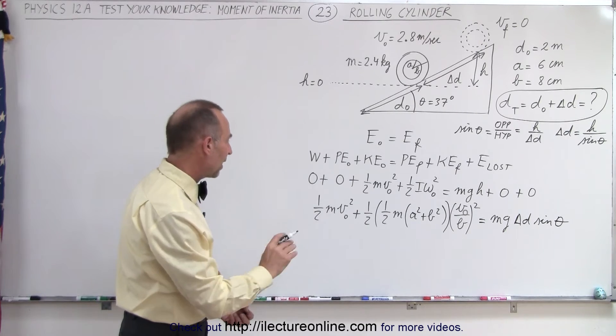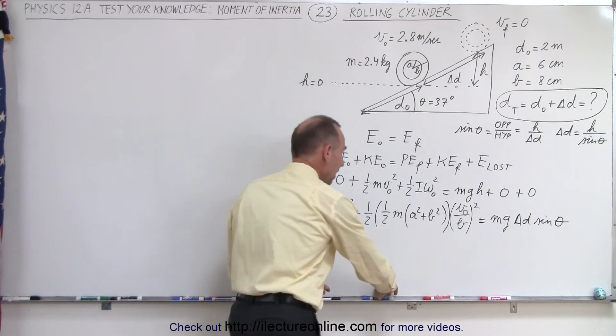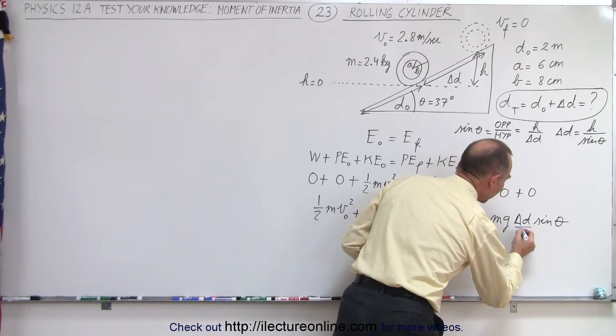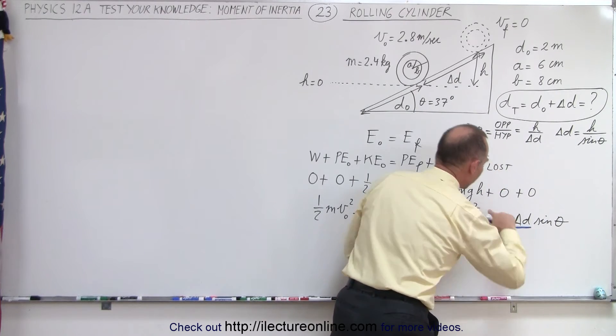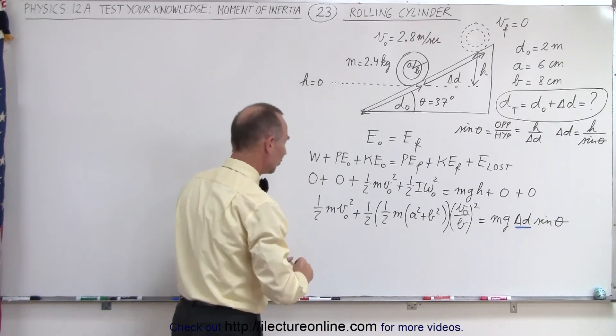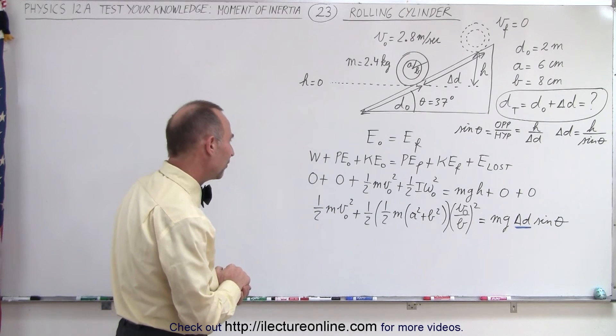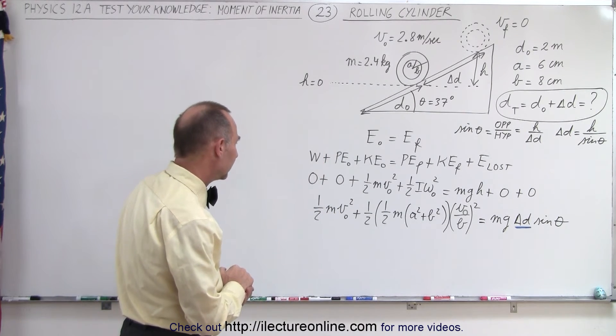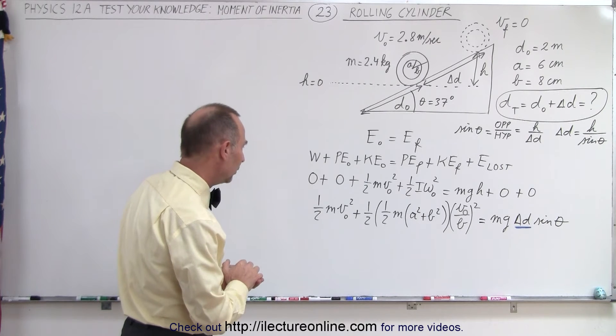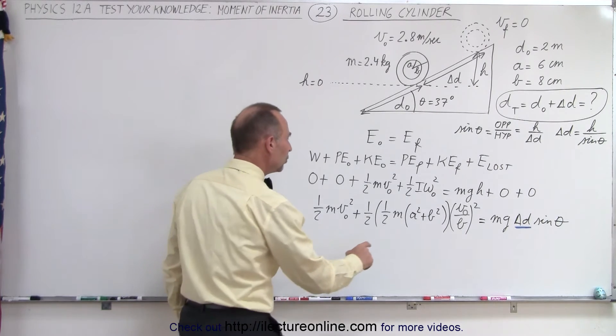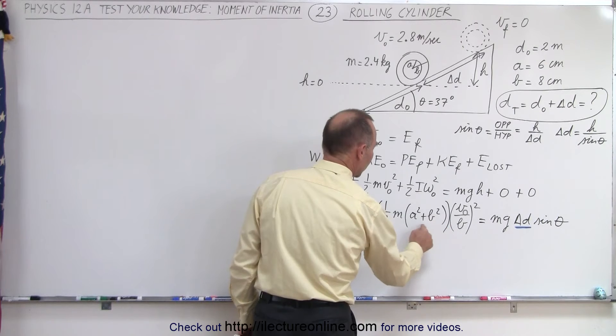So now we have everything we need, and we have the delta d in the equation that we're looking for. So we're looking for that, so we have to somehow manipulate the whole equation to solve for that. Let's see, can we simplify things a little bit? Well, we'll leave that for now.